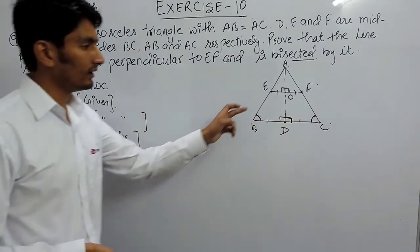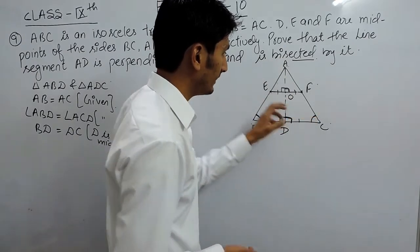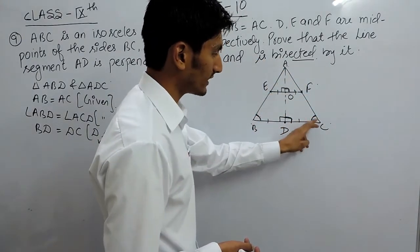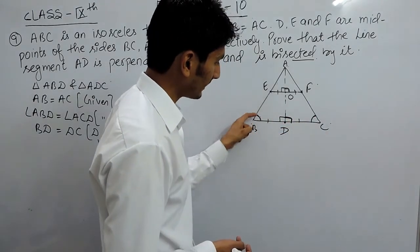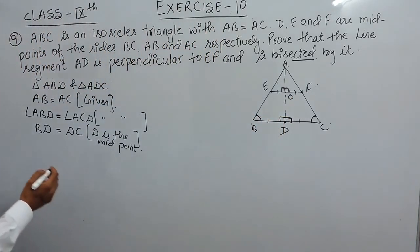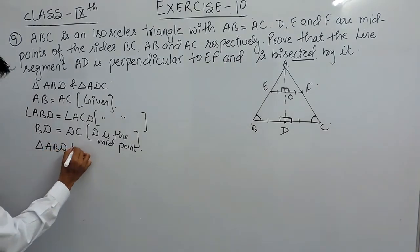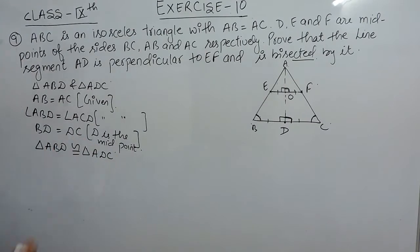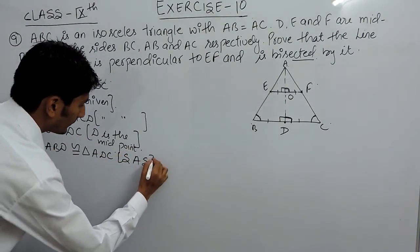Now in triangle ABD and triangle ACD: this side equals this side, this angle equals this angle, and this side equals this side. So by the Side-Angle-Side property, these two triangles are congruent. Triangle ABD is congruent to triangle ADC by SAS.